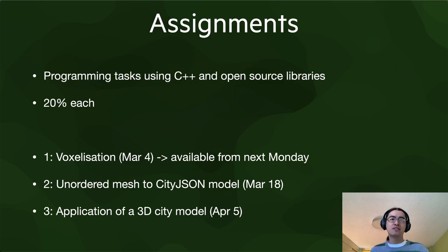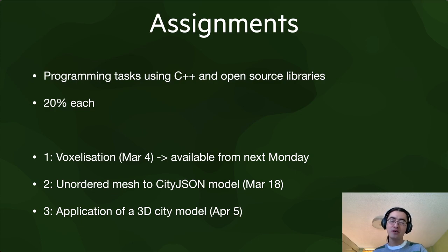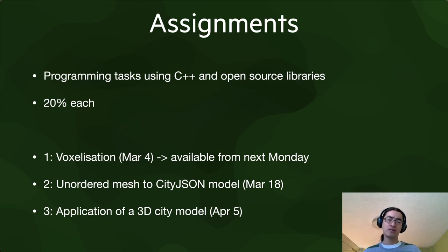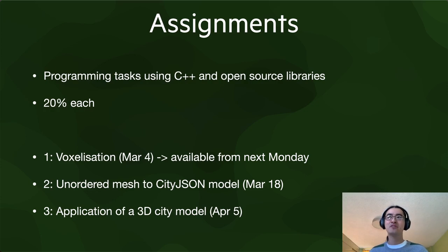The third assignment is about applications of a 3D city model. We're still not 100% sure what to do — it might be calculations of solar potential: starting from a 3D city model, look at the surfaces and see how much sunlight hits each part of the model so you can estimate whether it's worth putting solar panels there.